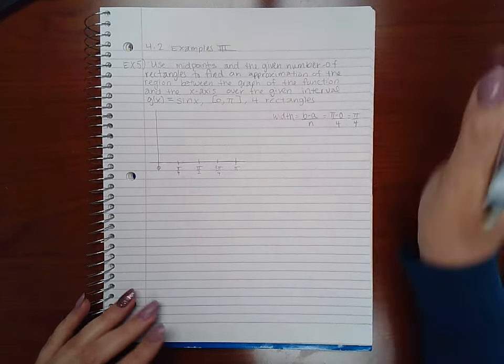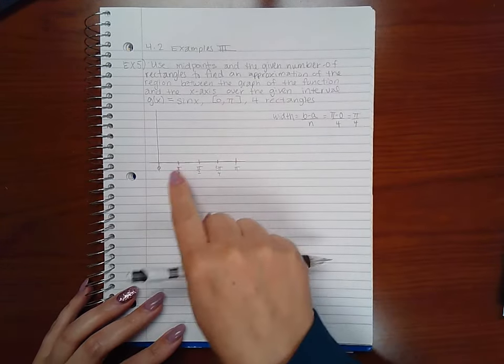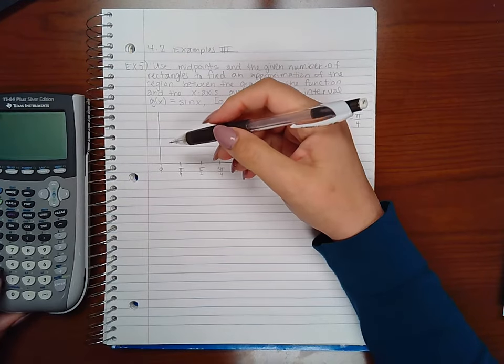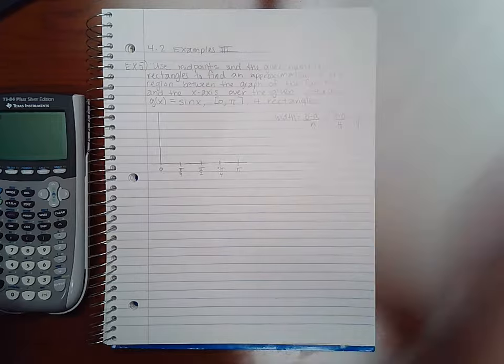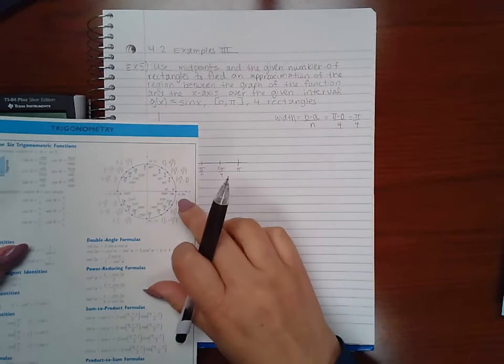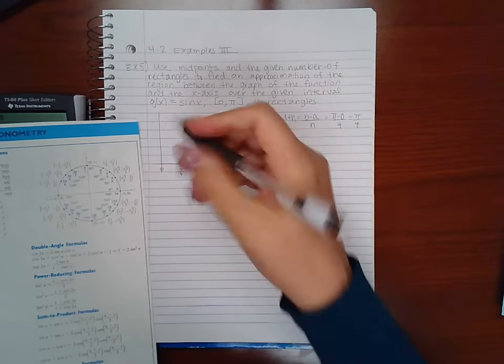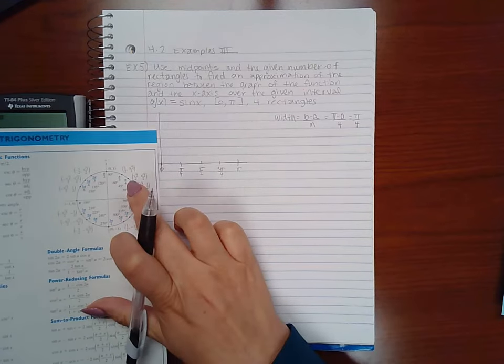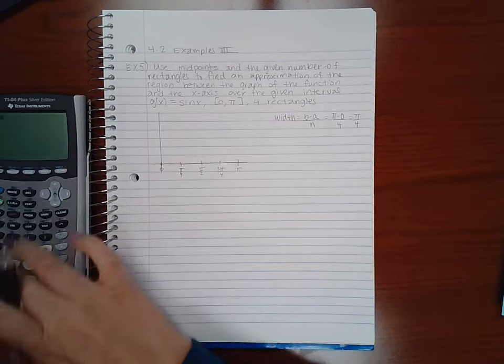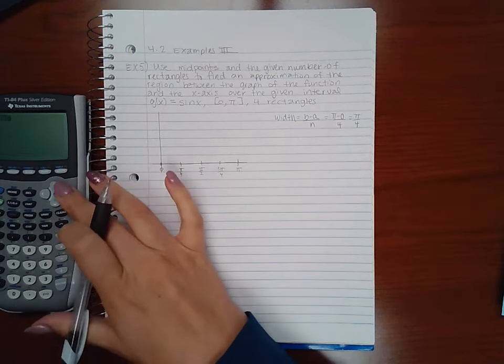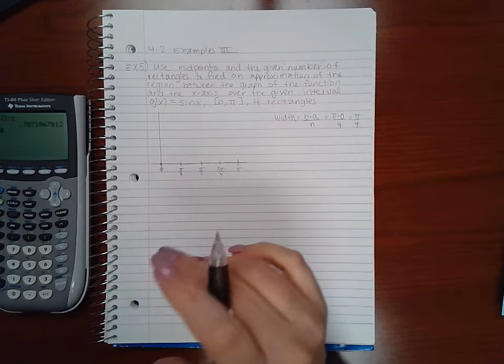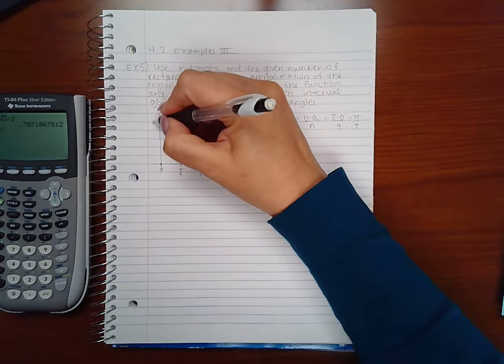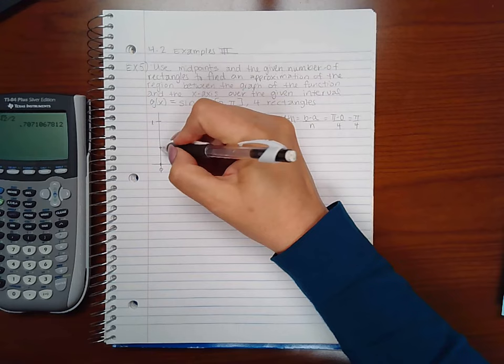So when I plug these guys into the function I can get the graph here. So sin of 0 I believe is 0. We'll just use this real quick. So sin of 0 the y value is 0. So the graph starts here. Sin of π/4 is square root of 2 over 2 which is approximately 0.7. Let's make sure. So let's say this is 1 and 2, 3, 4, 5 so about half would be here.